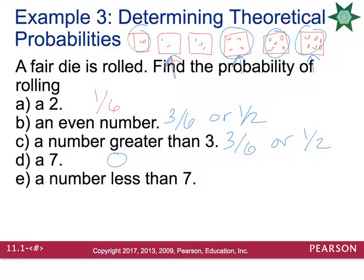What is the probability of rolling a number less than seven? Well, every single number on the die is less than seven. So that would be six out of six, or 100% probability, which is one.